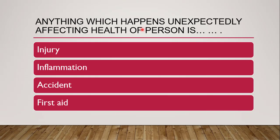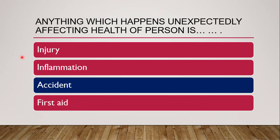Next question: anything which happens unexpectedly affecting the health of a person — is it injury, inflammation, accident, or first aid? The correct answer is accident. It can be an injury also, since after meeting an accident there are chances of injury. But accident definitely includes situations where the severity may vary from a small skin abrasion to sudden death of the patient.